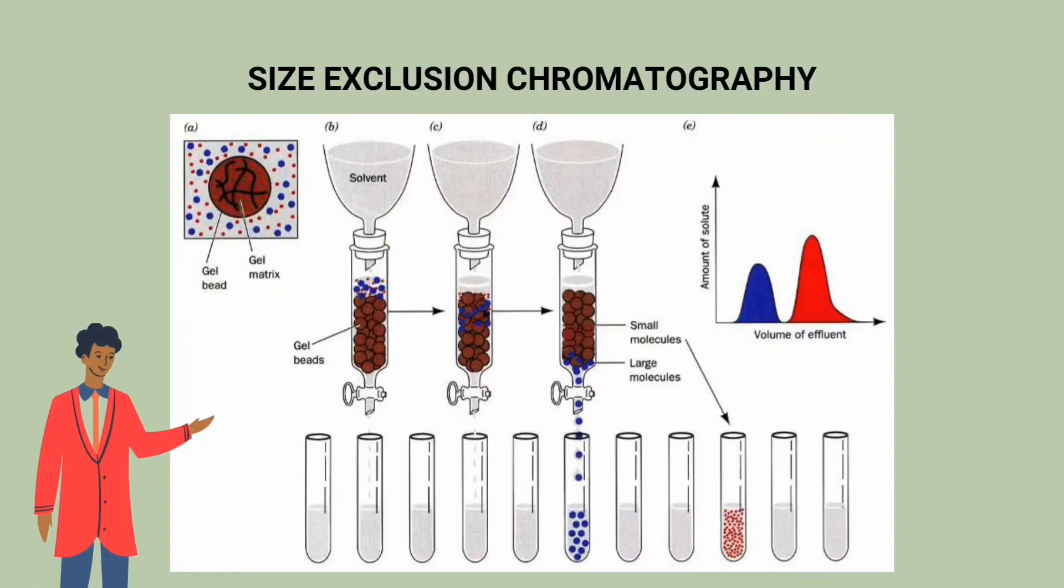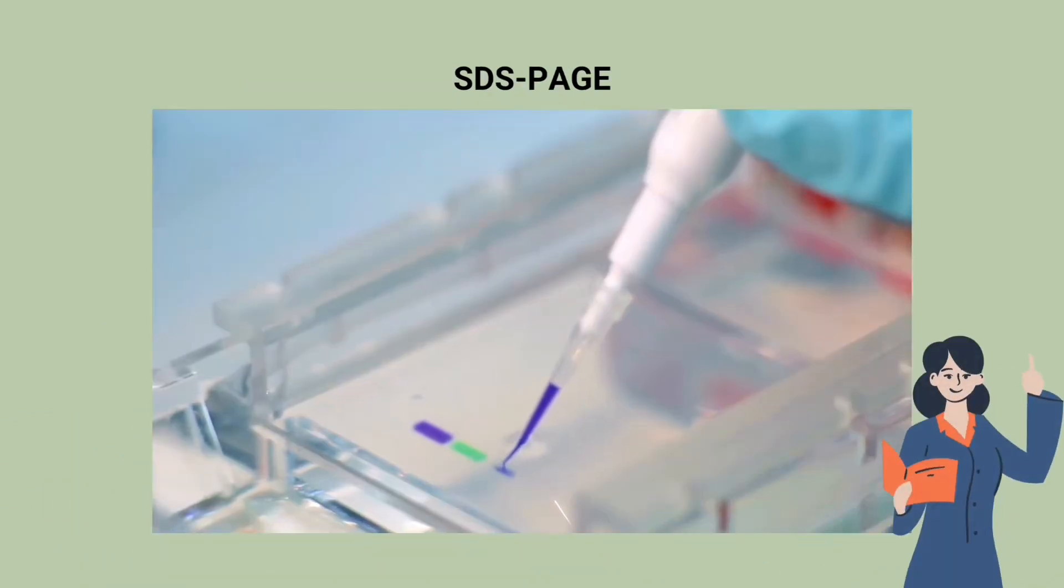In size exclusion chromatography, a protein is separated from the rest of the molecules in a solution by its size. Similarly, we can also perform sodium dodecyl sulfate polyacrylamide gel electrophoresis to separate proteins based on their molecular size.